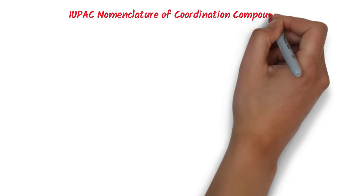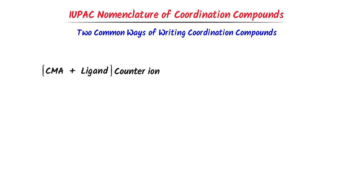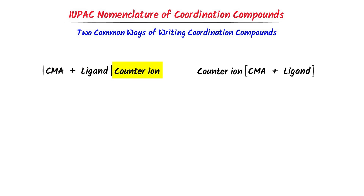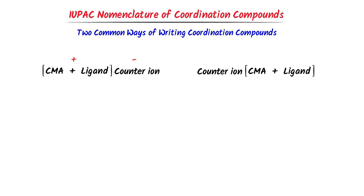IUPAC Nomenclature of Coordination Compounds. There are two common ways of writing coordination compounds. In this case, the coordination sphere is present at the left-hand side and the counter ion is present at the right-hand side. The left side is always considered to be the positive charge and the right side is always considered to be the negative charge. According to the rules, we firstly name the ligand part, secondly we name the central metal atom, and lastly we name the counter ion.